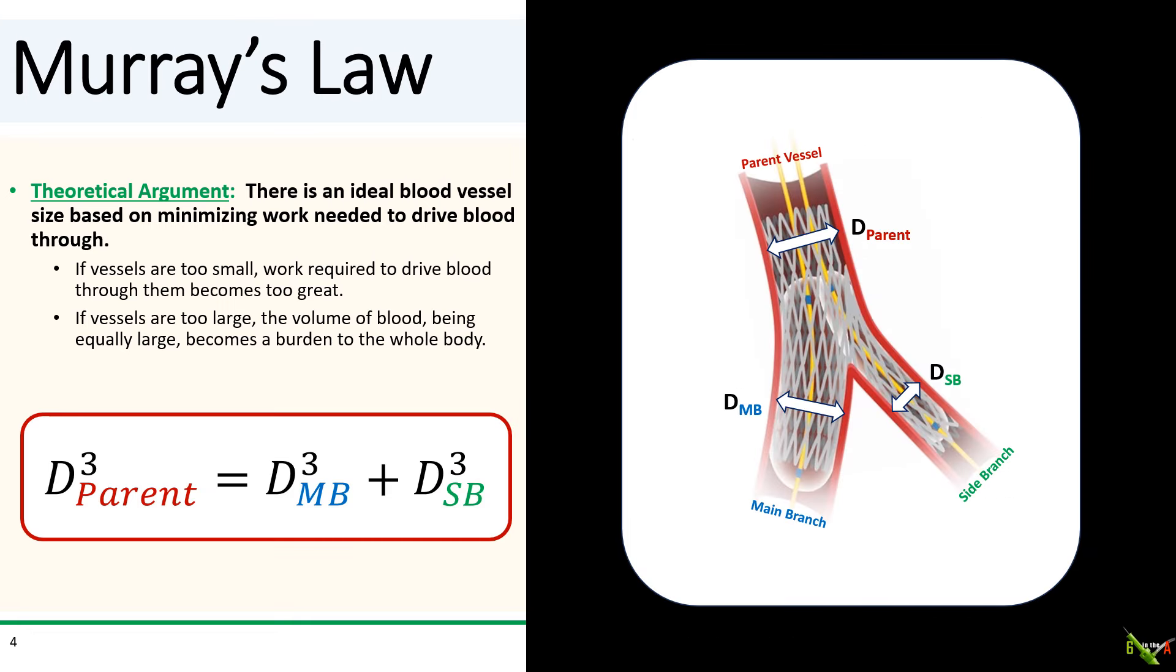The details for how Murray derived this formula can be found in his 1926 PNAS paper, but in essence, Murray proposed that for all bifurcations, the cube of the diameter of the parent vessel must be equal to the sum of the cube of the diameter of the main branch and the cube of the diameter of the side branch. Needless to say, these calculations are tough to do in your head in the middle of the case, and I would venture to guess that most interventionalists have never even heard of Murray's law.